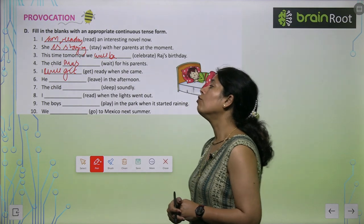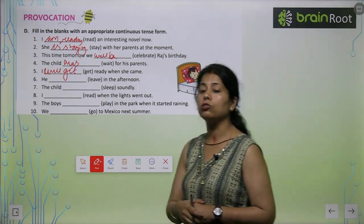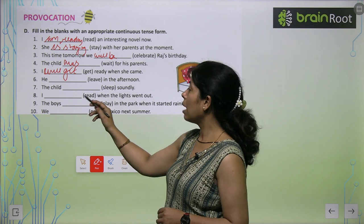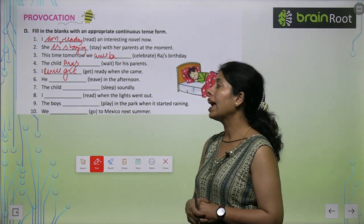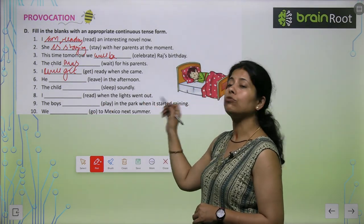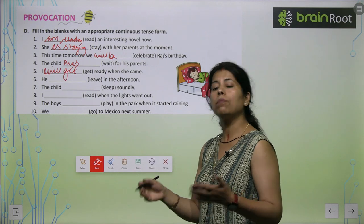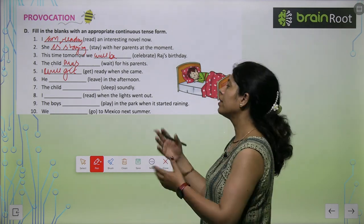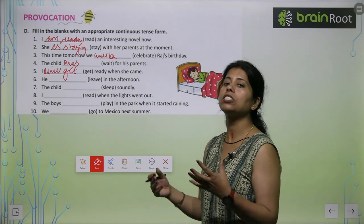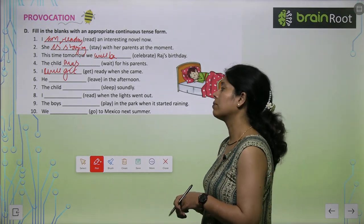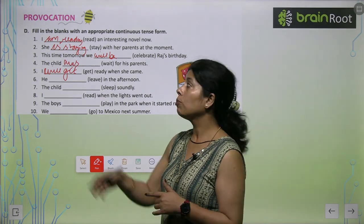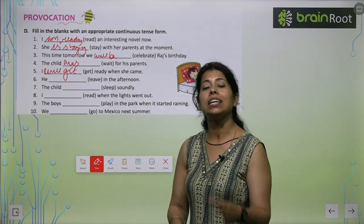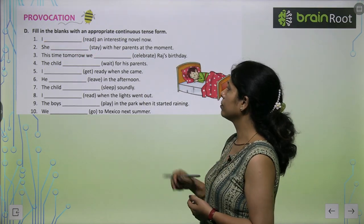'The child is sleeping soundly.' 'I was reading when the lights went out.' 'The boys were playing when it started raining.' 'We will go to Mexico next summer.' You have to focus on what the given sentence is and what continuous tense form you need to put in it.